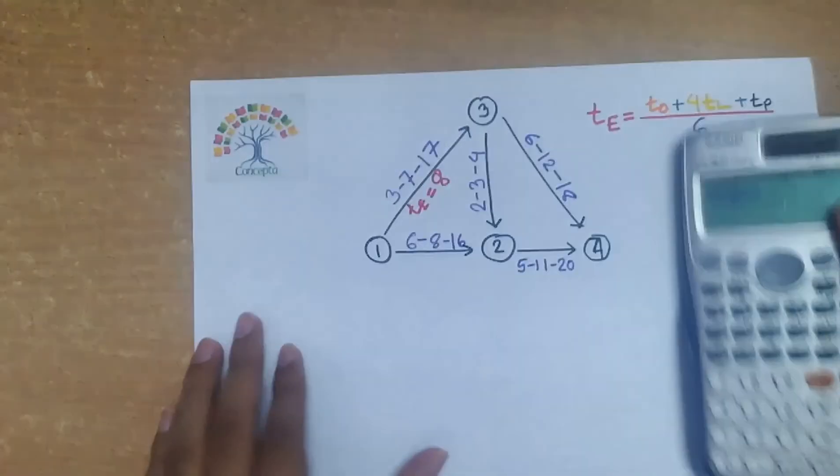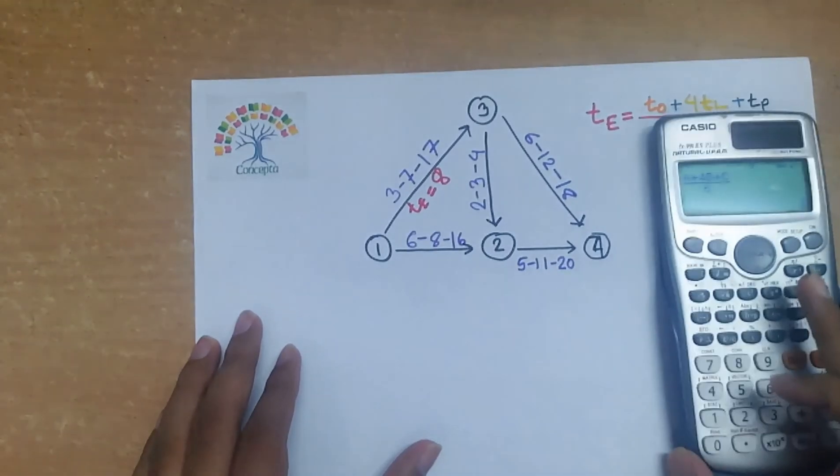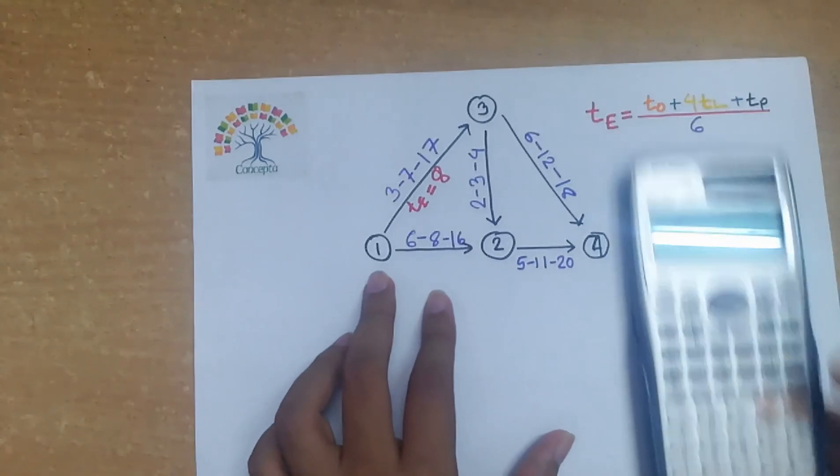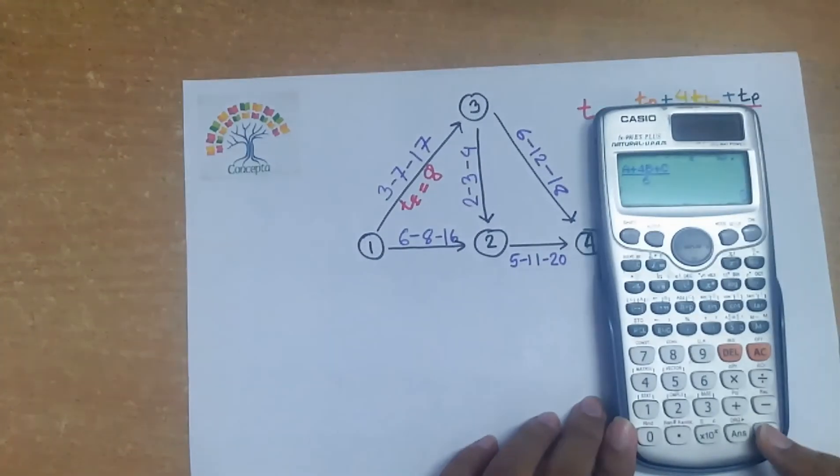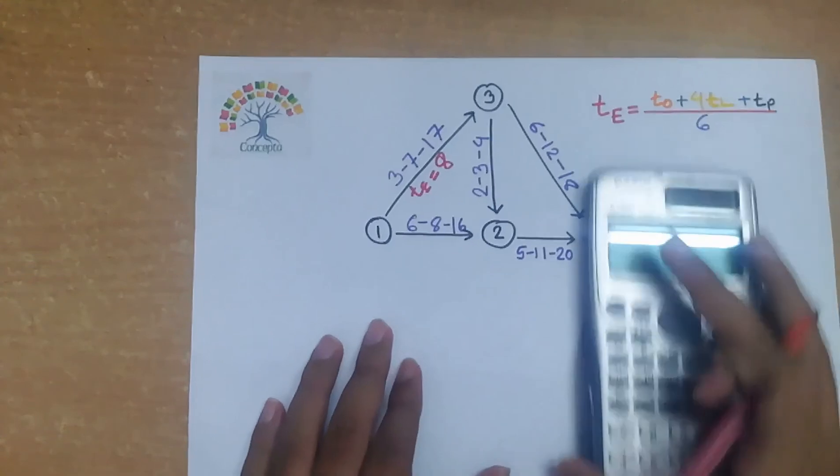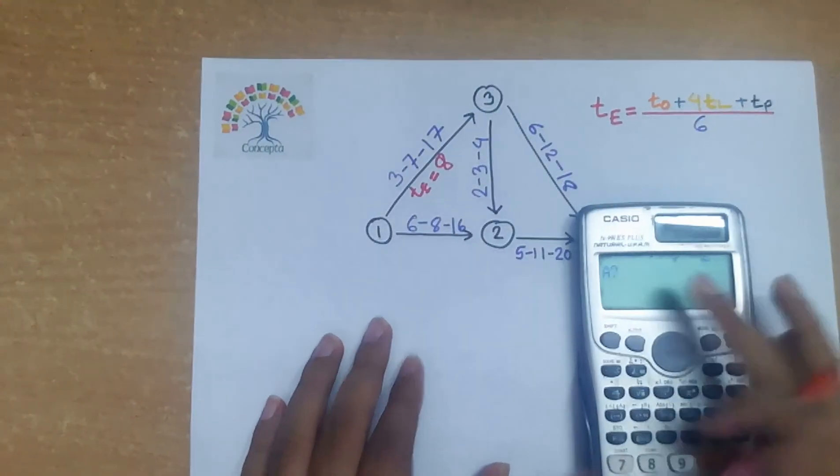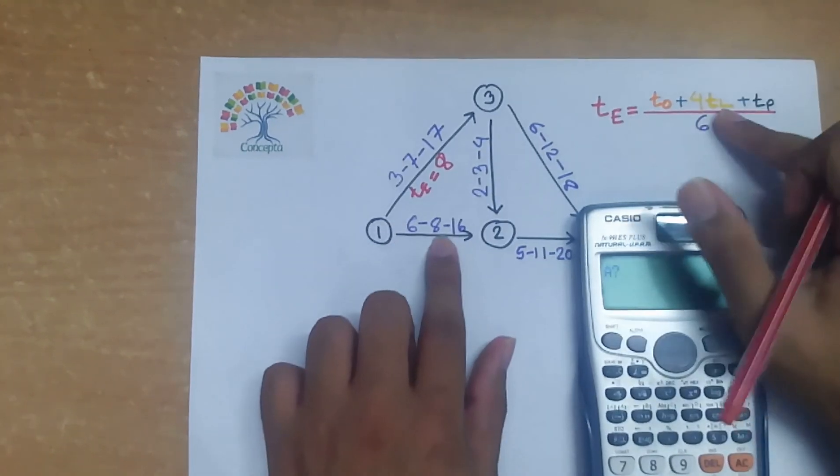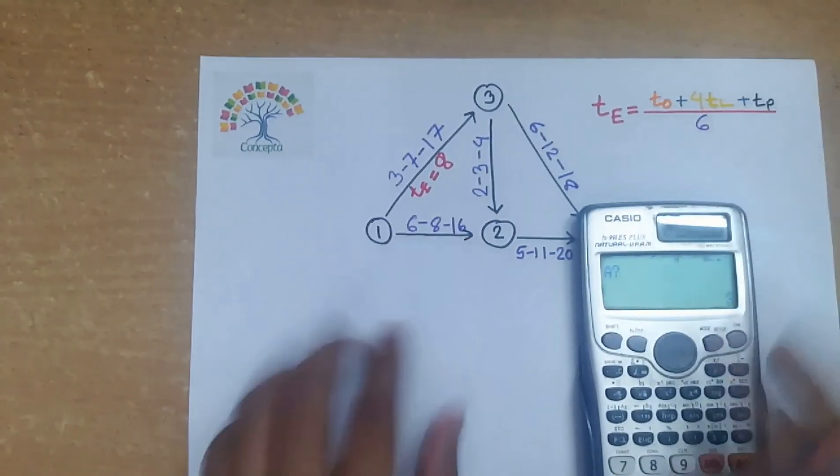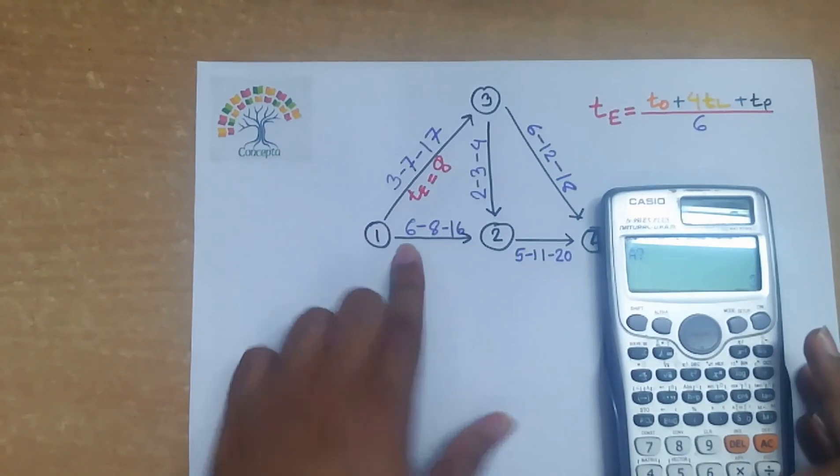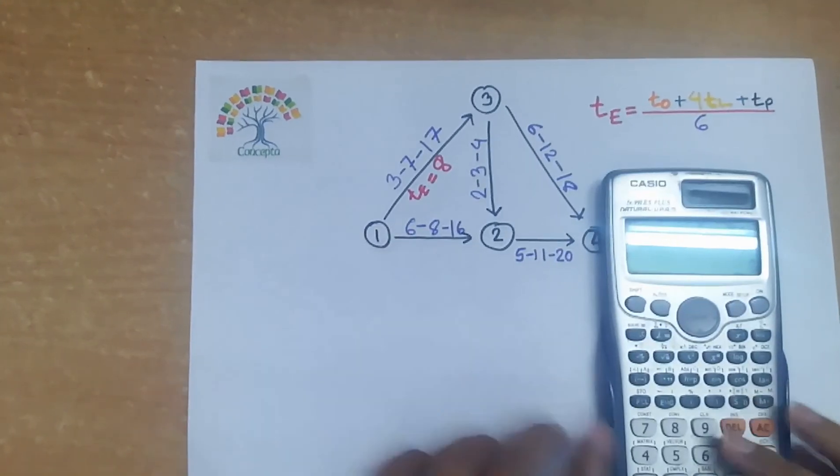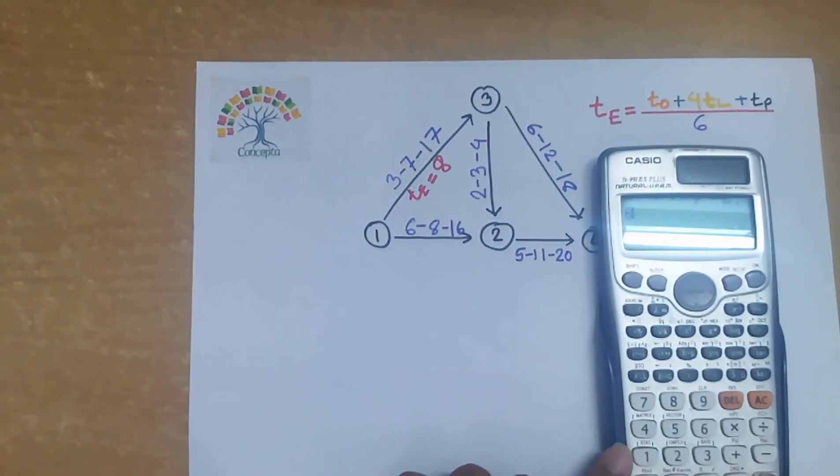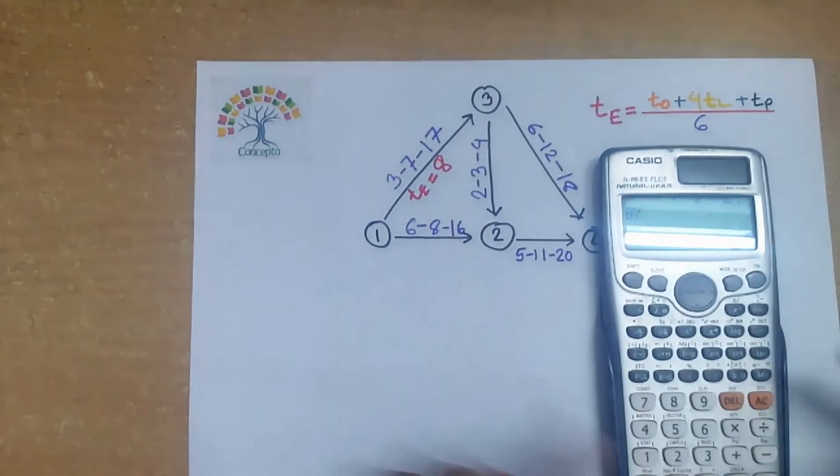If we solve for another path, so let's consider path 1-2 here. Then again put equal. Then again comes a equals to what, a equals to what. Then again we put a. Here in path 1-2, 6 for t0, 8 for tl, and 16 for tp. So we will put 6 for a. Then press 6. Then again b equals to what. Then press 8.